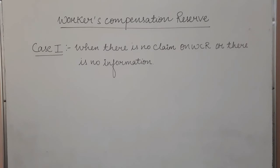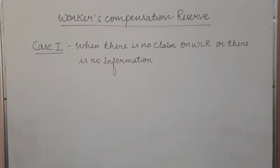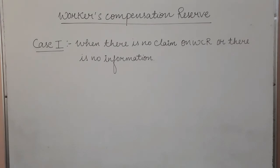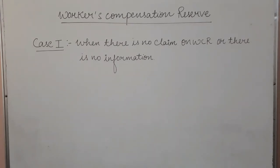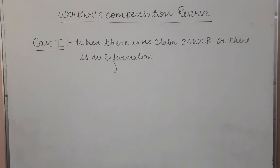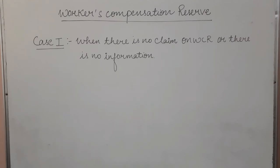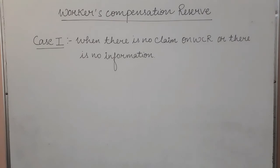The very first case is when there is no claim on WCR and there is no additional information in your question. The WCR is made from profits, and those retained profits belong to the old partners. So whether it is admission or change in profit sharing ratio, with no information given, it will be distributed in the old ratio. The entry will be: WCR account debit to old partners' capital account in their old ratio.